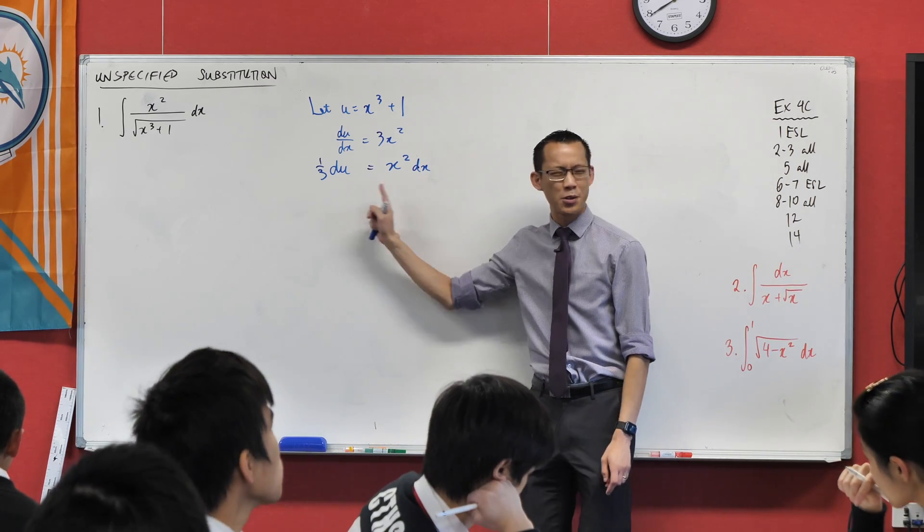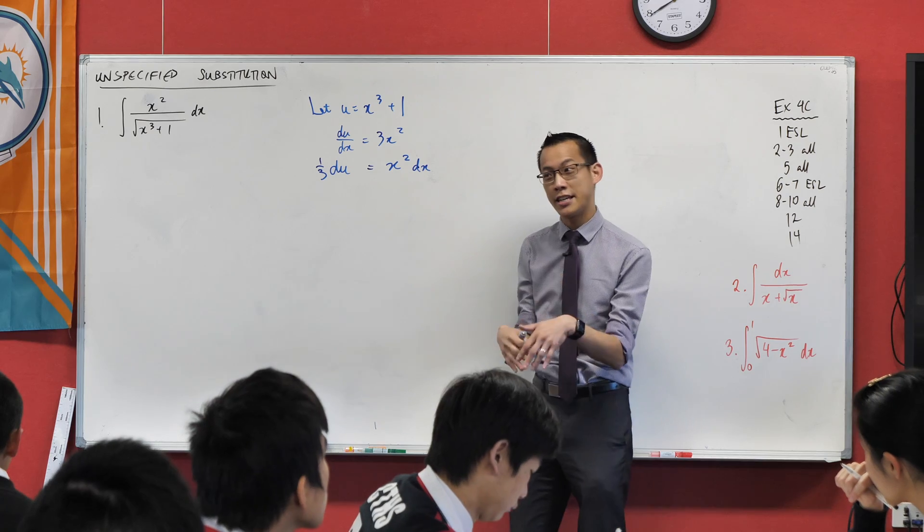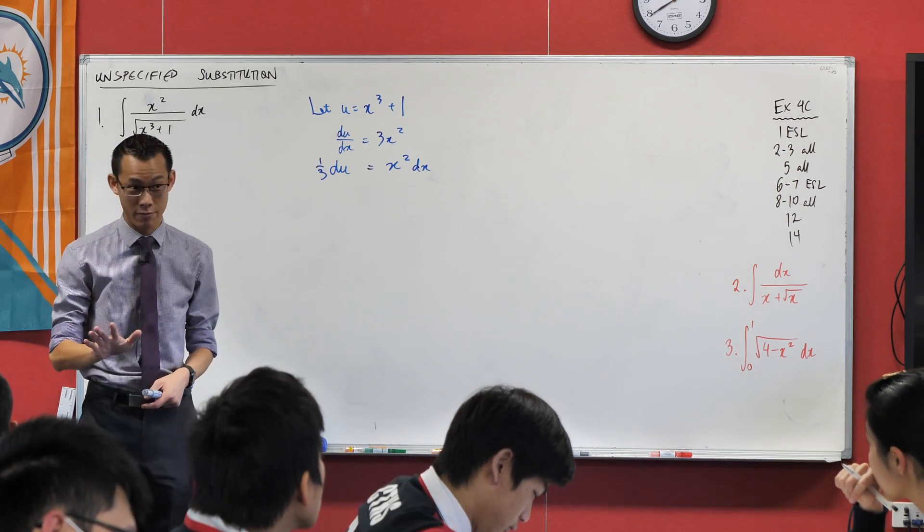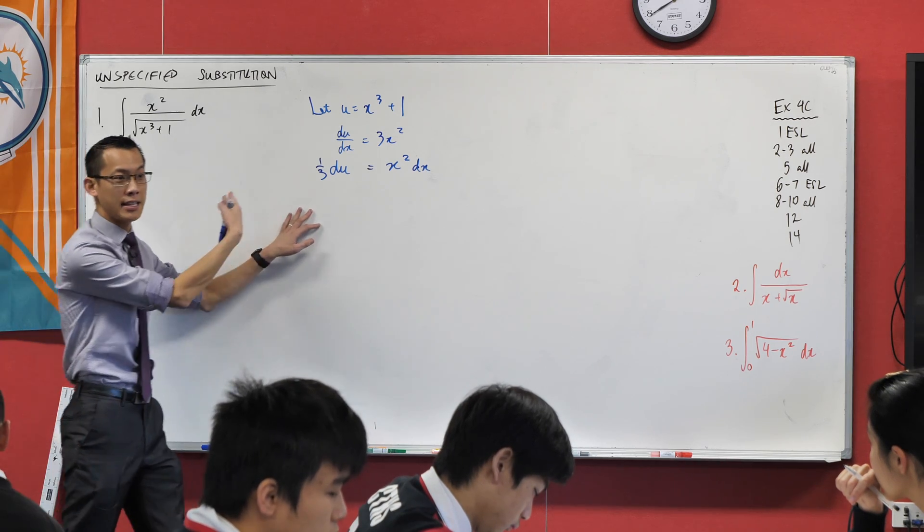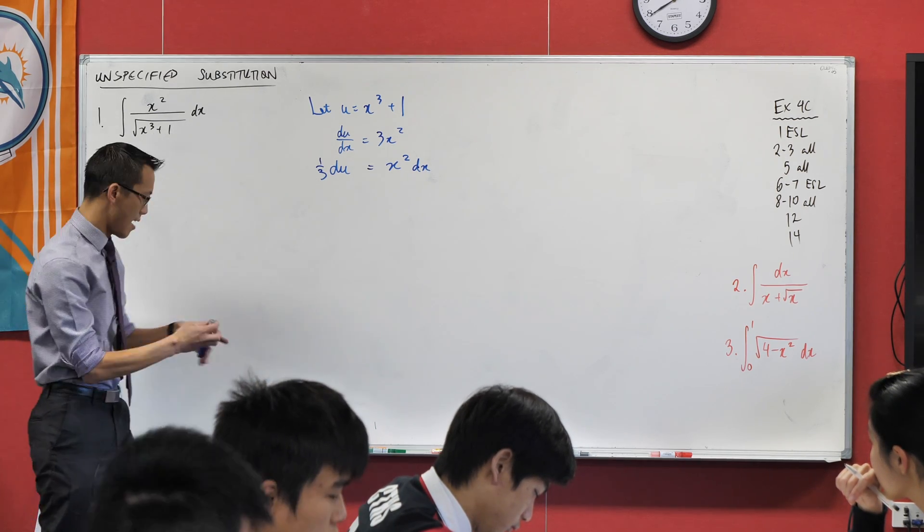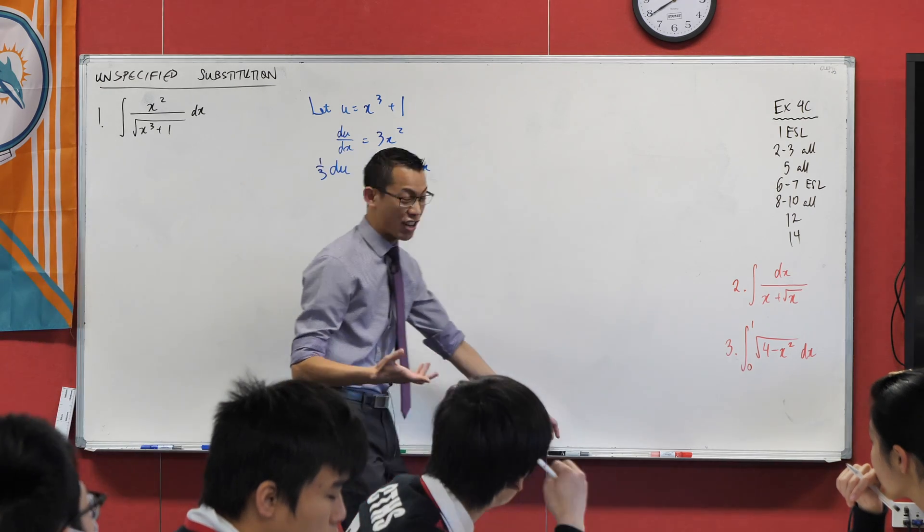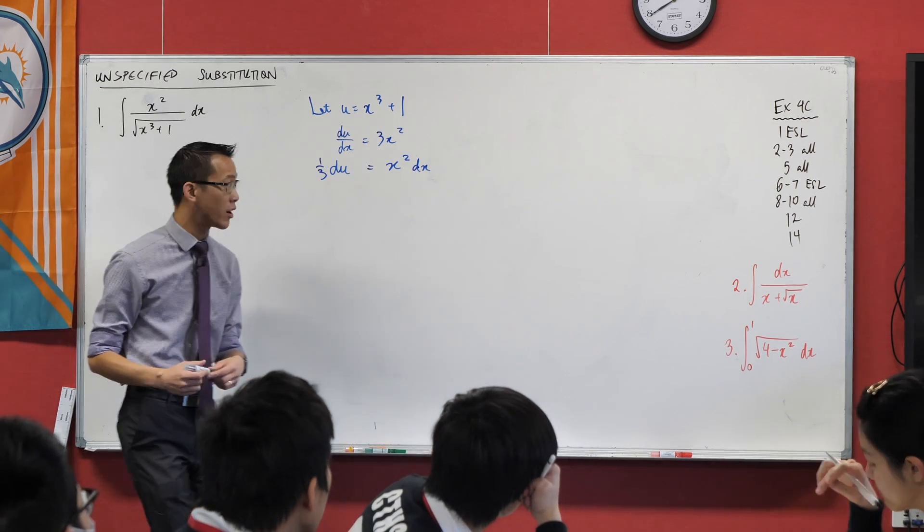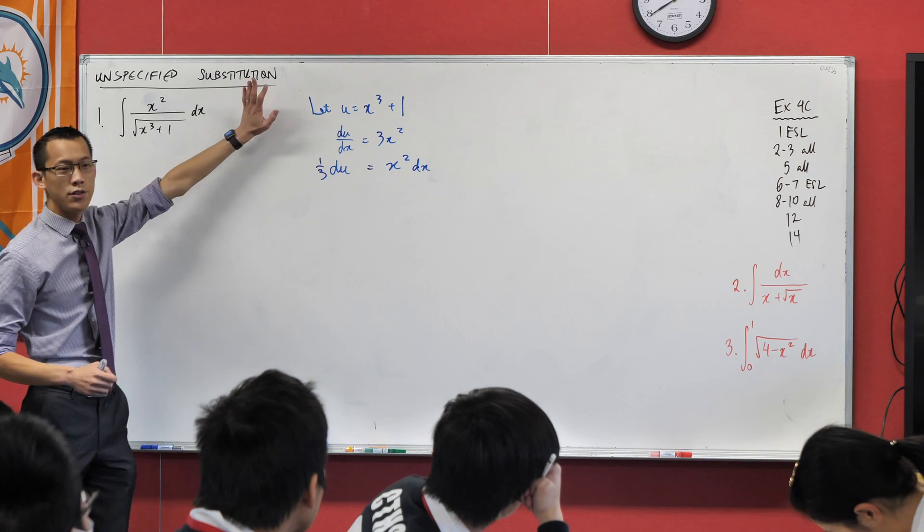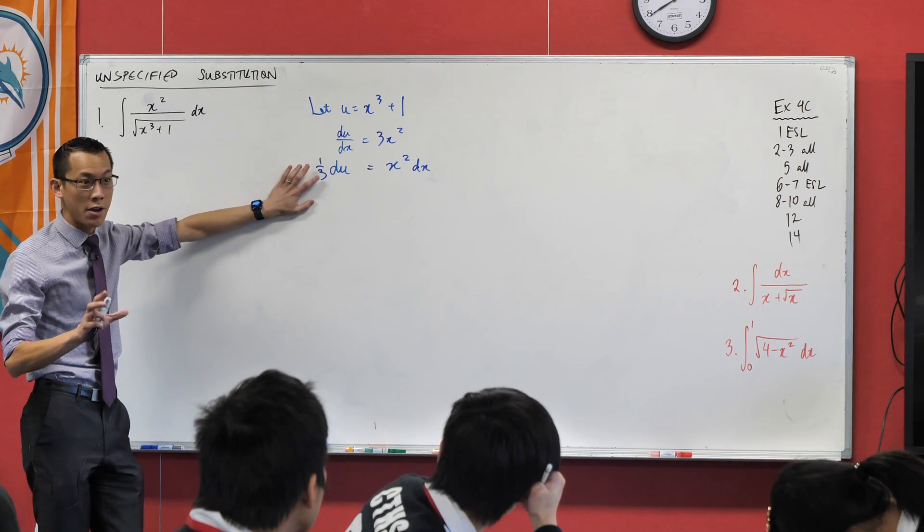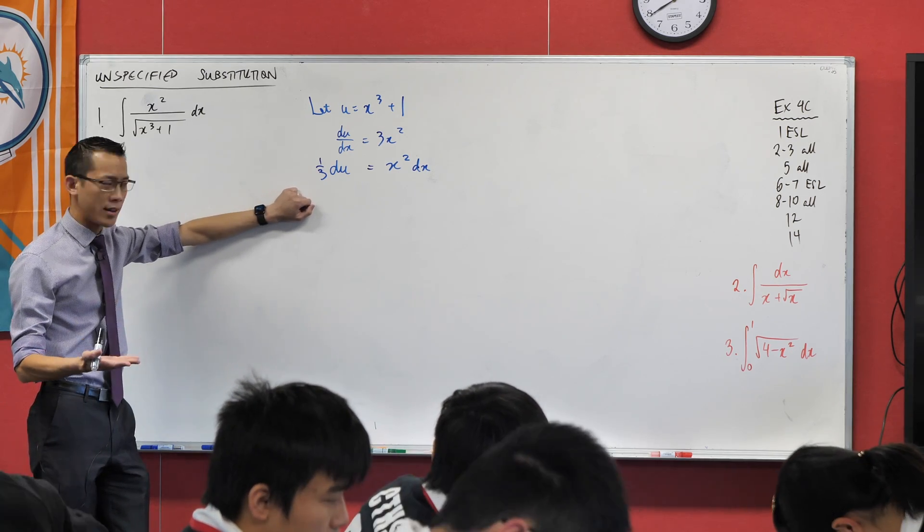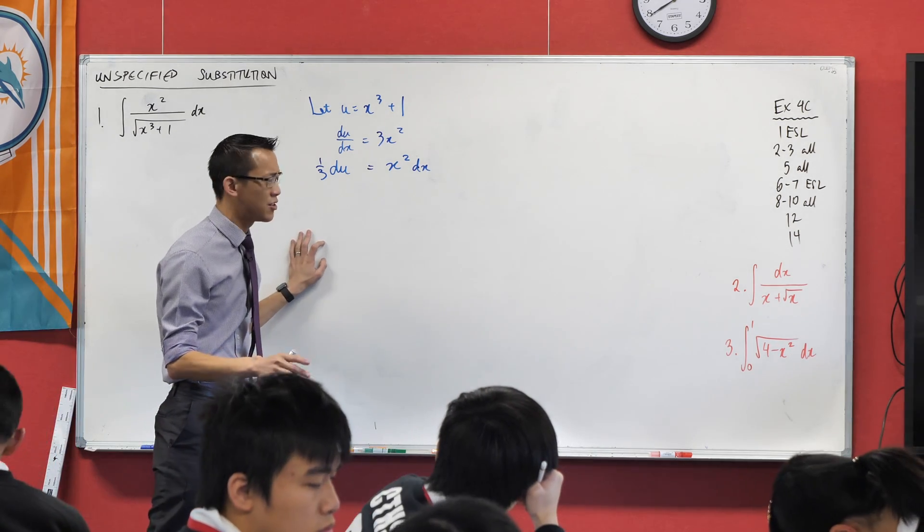So, by rights, we shouldn't actually be able to do this. We're treating du on dx like a fraction, even though it isn't really. That's the Achilles' heel when you use this notation. However, it is still actually useful. In the context that we're going to work with, whenever you use chain rule, you actually can treat du on dx very much like a fraction.